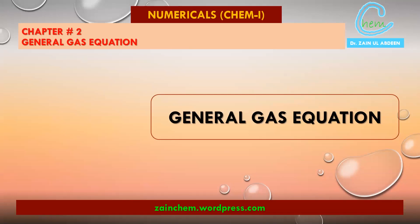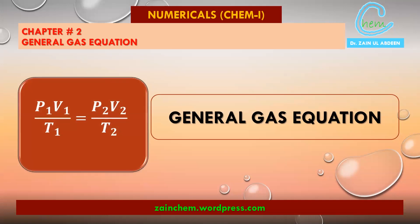Bismillahirrahmanirrahim. Today we are going to solve a numerical on the general gas equation. The formula is in front of you: P1V1/T1 = P2V2/T2. This is called the equation of state in two-state form, and the general gas equation is basically derived from the equation of state, PV = nRT.